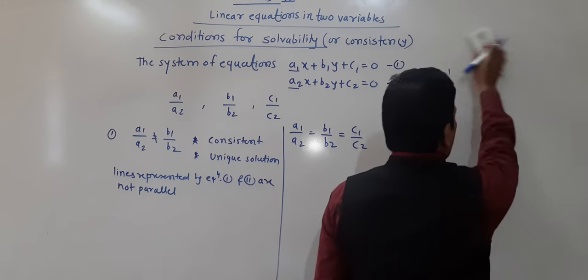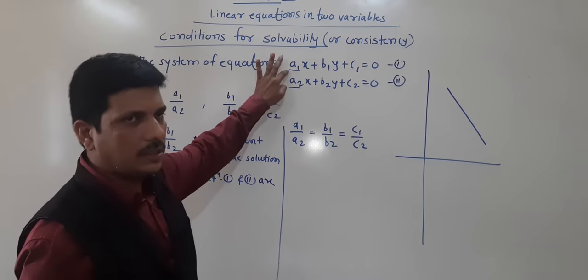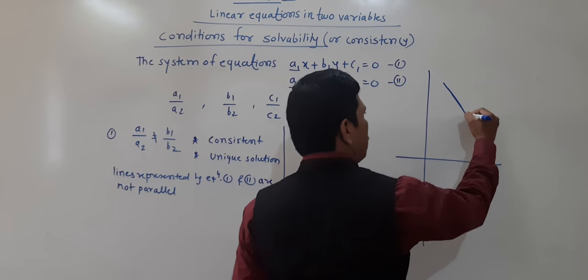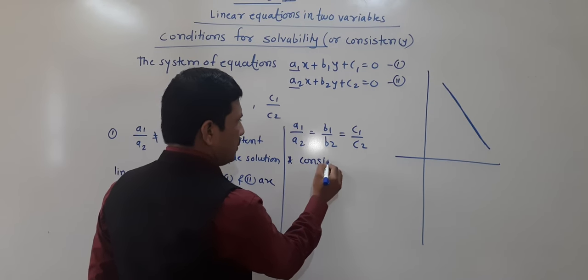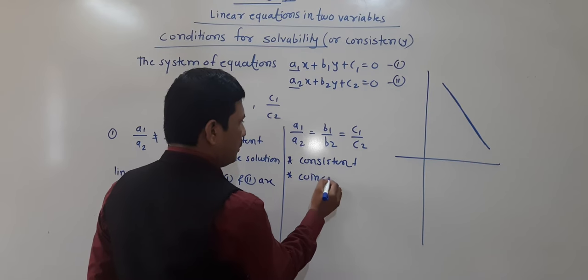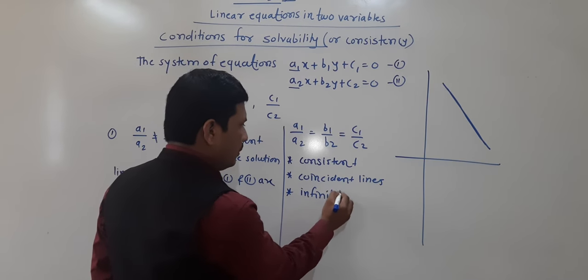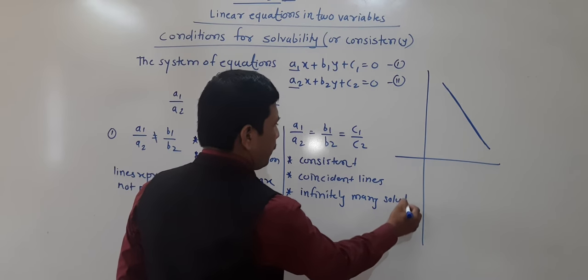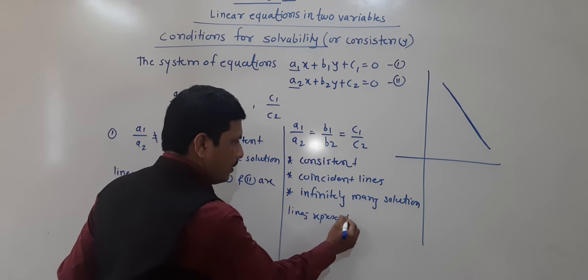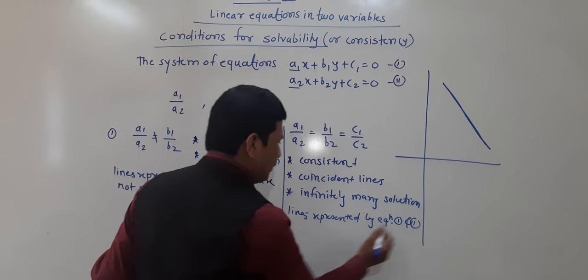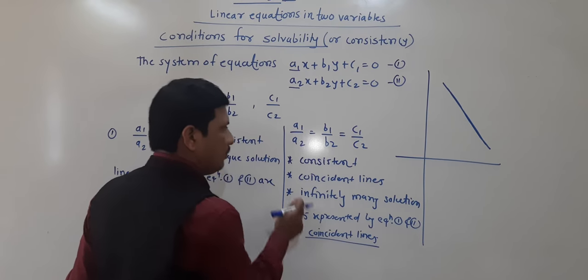Coincident lines means there are two equations and each equation shows a line, but both equations show the same line at the same position. This condition is known as coincident lines — the system is also consistent. Coincident lines means infinitely many solutions. Lines represented by equations first and second are coincident lines, so there are infinitely many solutions.